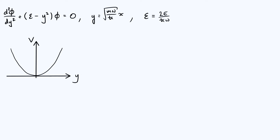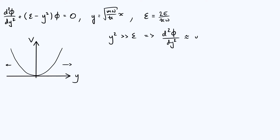Just to help visualize what's going on, I've sketched out our quadratic or harmonic potential V as a function of y. We're going to begin by getting an approximate solution to the Schrödinger equation and then use what we learn from that to work towards an exact solution. We imagine going to very large positive or very large negative values of y — the far left or far right of the diagram. At either extreme, y squared becomes much bigger than epsilon, so we can ignore the epsilon term in the differential equation and get that d²φ/dy² is approximately equal to y² times phi.